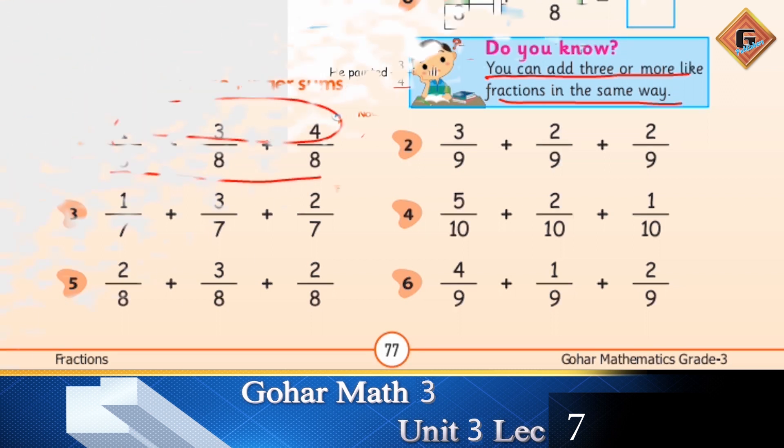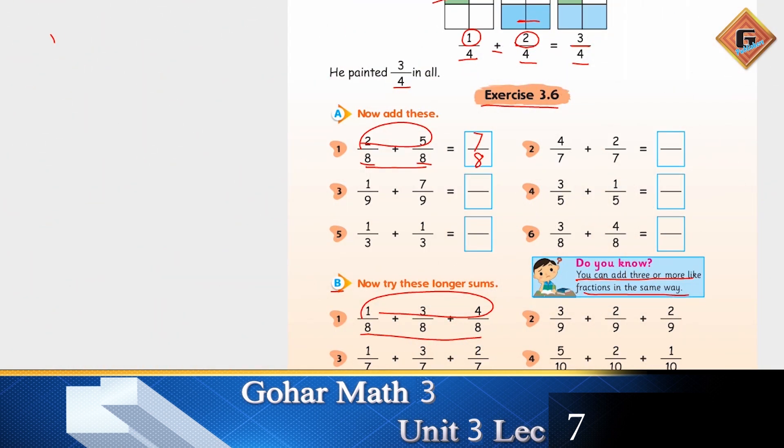For this first one, we are going to write the denominator eight, and the numerators are one plus three plus four. One plus three is four, and four plus four is eight. So our answer is eight over eight. That is how we are going to solve these.